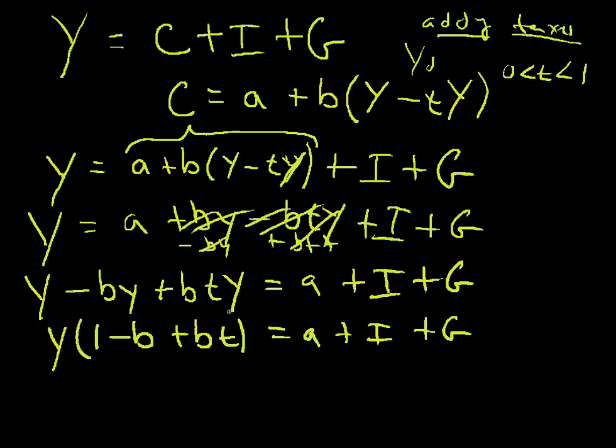We're getting close now. Because what we're doing is formulating a new multiplier. It's a new multiplier that will describe what the multiplier is with taxes. So we take y here and we multiply this side by 1 over 1 minus b plus bt. So that gets rid of that term which is down here.